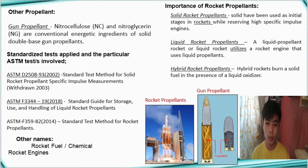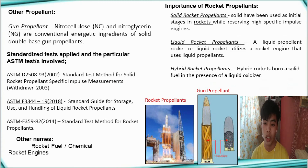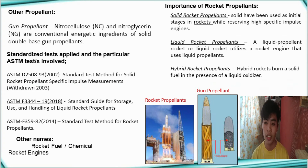Importance of rocket propellants. Propellants are used to produce a gas that can be directed through a nozzle, thereby producing thrust. In a rocket, rocket propellants produce an exhaust, and the exhausted material is usually expelled under pressure through a nozzle.